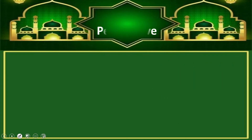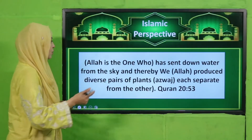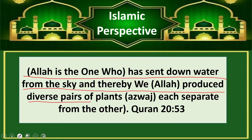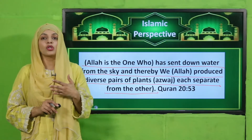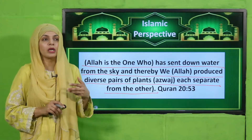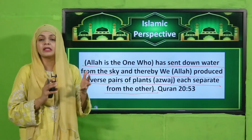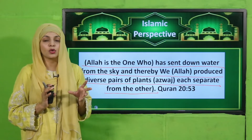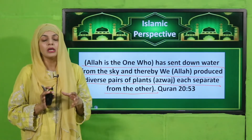My dear students, now let's quickly look at the Islamic perspective. Allah says in the Quran that Allah is the one who has sent down water from the sky, and thereby Allah produces diverse pairs of plants, each separate from the other. So is ayat se bhi yeh baat zahir hoti hai ke paudhon ko paani ki zaroorat hoti hai bahut zyada, jisse paudhe grow karte hain. Chahe plants shade lovers hon — kuch paudhe aise hote hain jinko aap direct sunlight mein nahi rakhte. Shade mein hote hain aur unko bahut kam sunlight ki zaroorat hoti hai, but still water unko bahut zyada chahiye hoti hai. So sunlight bhi unko chahiye hoti hai lekin in a very little amount.